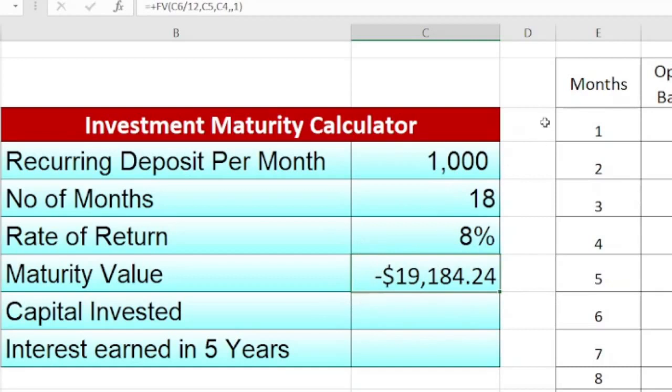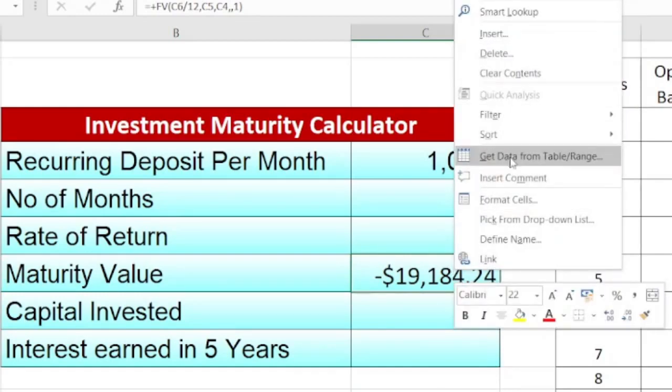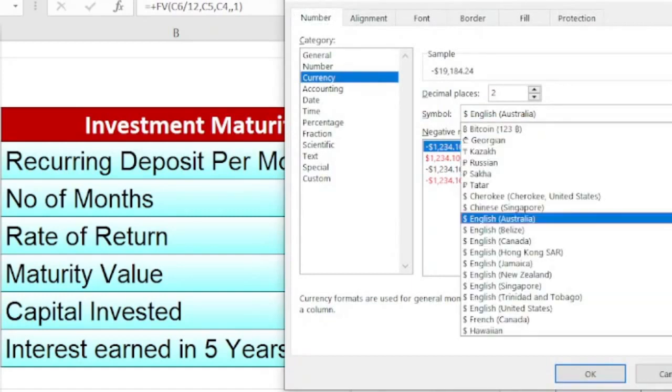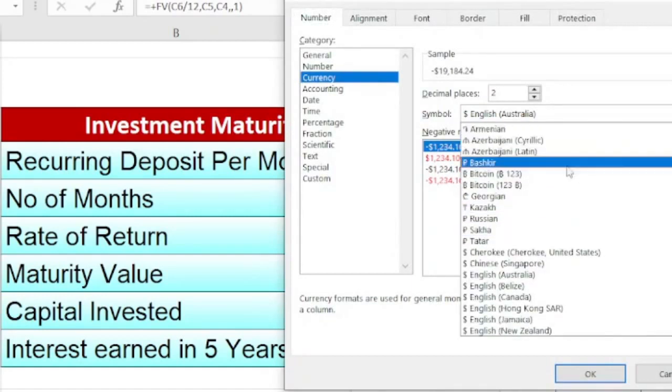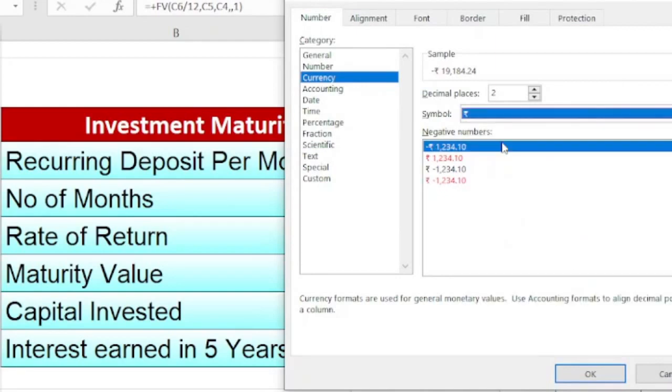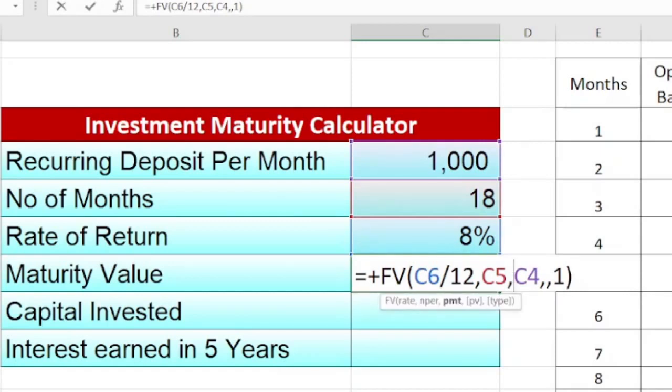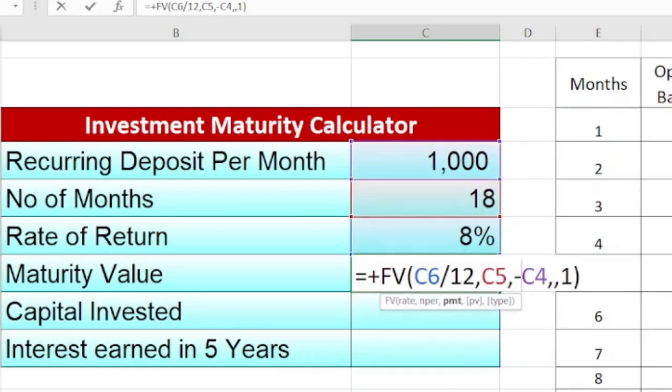It is showing as dollars. If I want to convert it into rupees, I can just right click and go to format cell. Currency is there. Here you can select any currency. I will select rupees and press OK. So it will come in rupees. Now the amount is coming as negative. How to remove this? I will do F2 and insert the minus sign, then press enter so that it is coming positively.